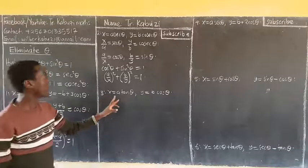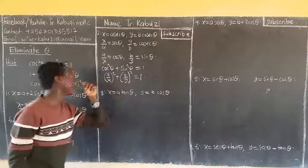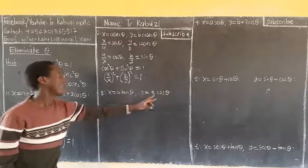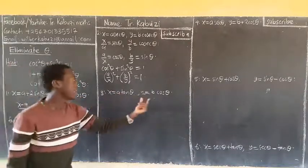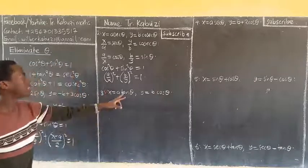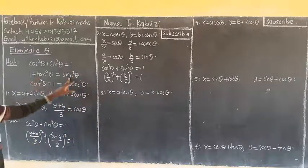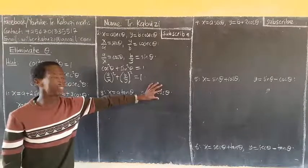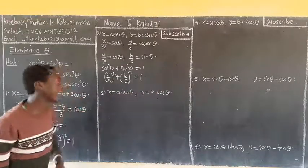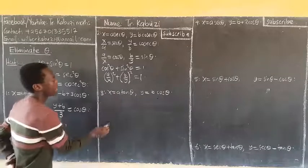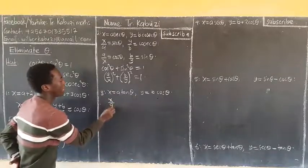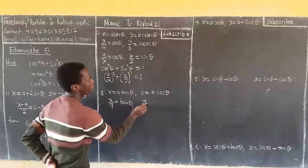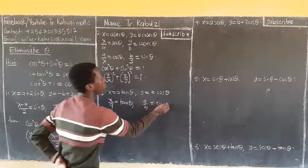In number 3, you see we have tan and cos. When you check the identities, you see there is not one directly linking tan and cos. But you see the one involving tan is: 1 plus tan squared equals sec squared theta. And you see that if you take the reciprocal of cos, it gives you sec. So from here, I have x over a equaling tan theta. From here, I have y over b equaling cos theta.